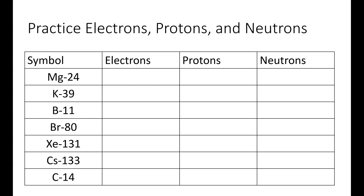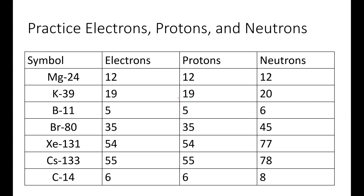I want you to take a moment to practice this, so if you could pause your video and try out each of these. We already did magnesium-24. Magnesium has an atomic number of 12, which tells us the number of protons. The electrons are equal to our protons in an uncharged atom. Our neutrons are the difference between our mass and our protons — so 24 minus 12 gives us 12. We can do the same thing with all of the others. Potassium is 19; the number of electrons is the same, and the neutrons is the difference.